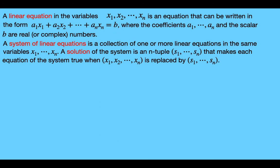Let's look at an example. We have a linear system of two equations and three unknown variables: x sub 1, x sub 2, and x sub 3. Any solution of this system is going to have to be a 3-tuple because we have three unknown variables.